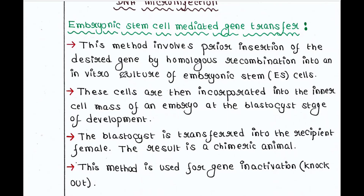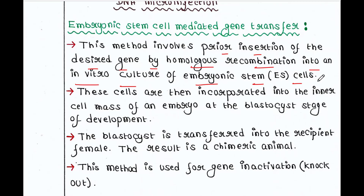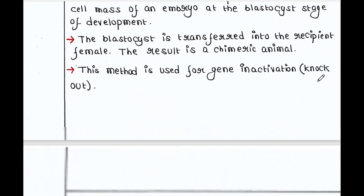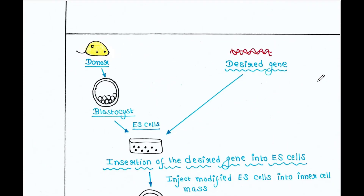The next process is embryonic stem cell mediated gene transfer. This method involves the prior insertion of the desired gene by homologous recombination into an in vitro culture of embryonic stem cells. These cells can be isolated from blastocysts.